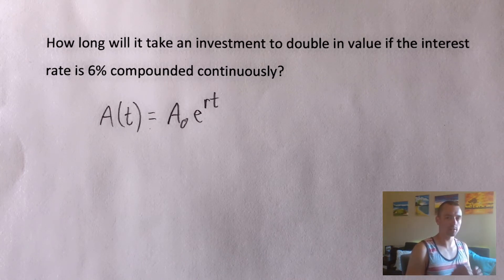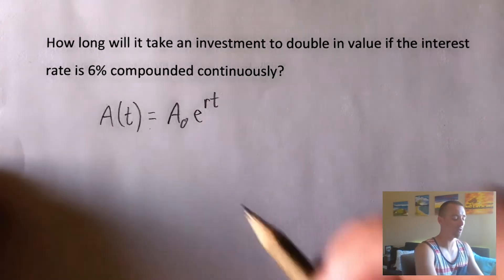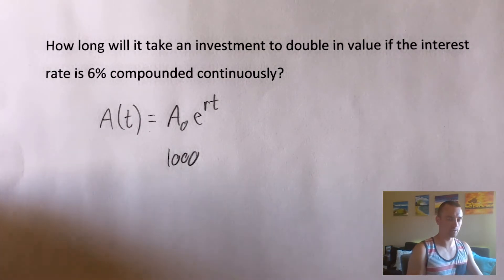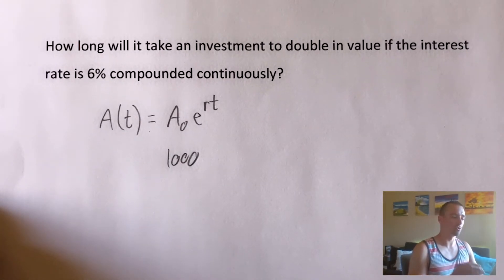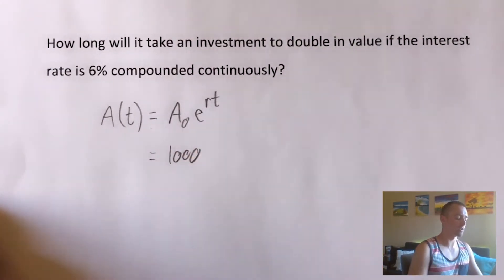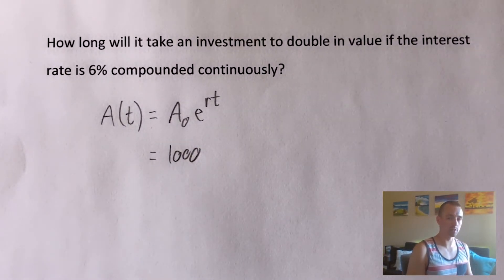So all that is to say really, that the amount of time it takes to double is not going to matter whether we have $1 in this account, $1,000 or $1,000,000. We can pick any amount to put into this account initially. So let's just say that we're putting in $1,000, for example sake, and that is going to be our initial amount of money that we're putting into this account, or into this investment. It doesn't matter what we actually pick.